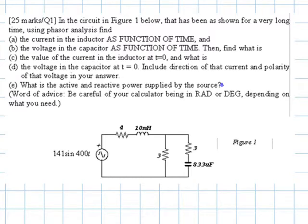This circuit has been as shown for a very long time. That phrase, as shown for a very long time, signifies that the circuit is in steady state. Because the source is AC, the circuit is in AC steady state, and we have a tool to solve circuits in AC steady state: phasor analysis.